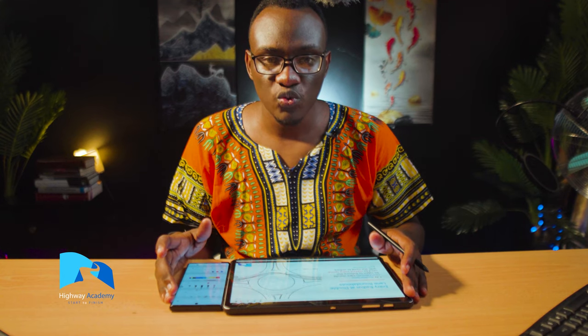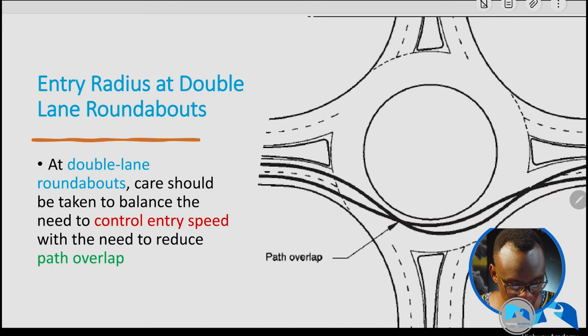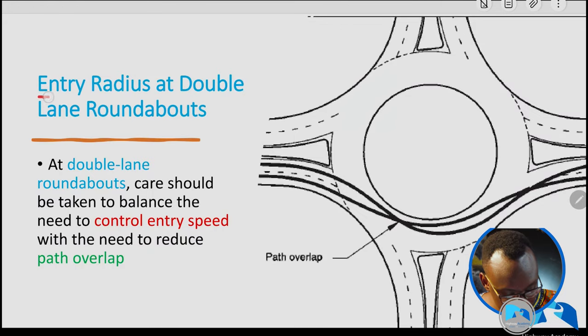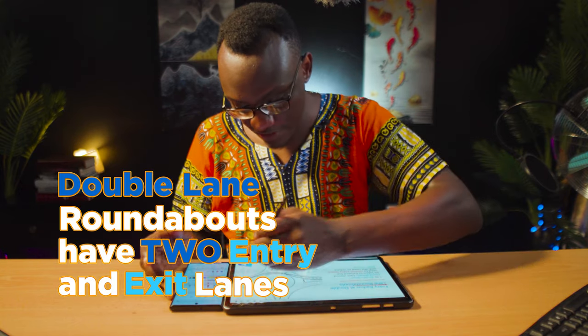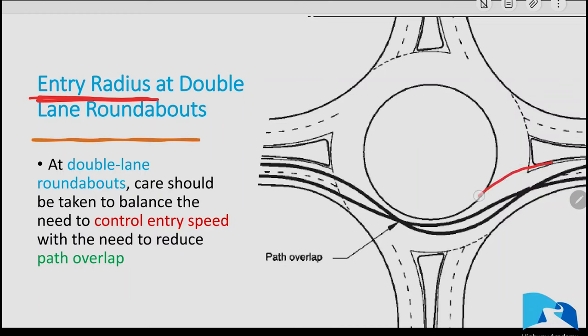Now for double lane roundabouts — where you have two lanes coming in and two lanes exiting — the entry radius can create a number of challenges. If in this example you have used a very small entry radius, what you find is that as vehicles are moving they're going to overlap.